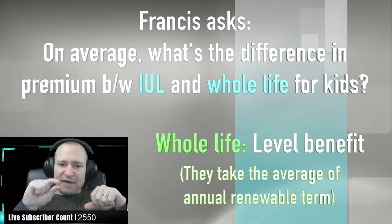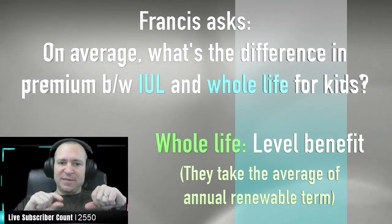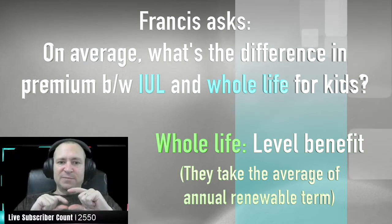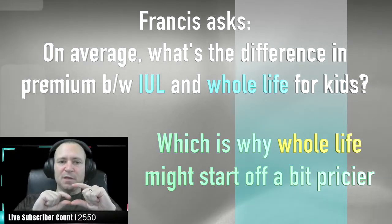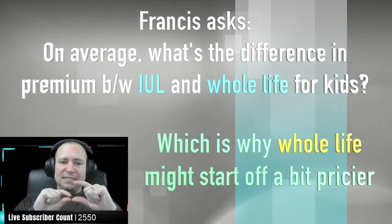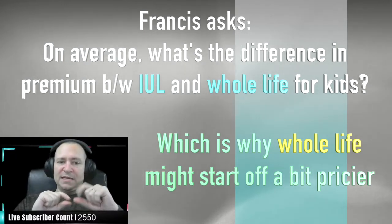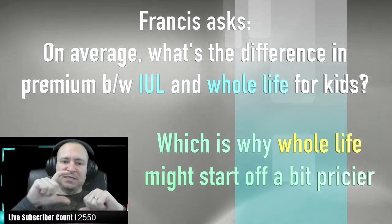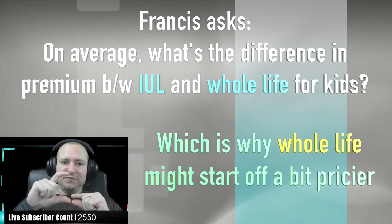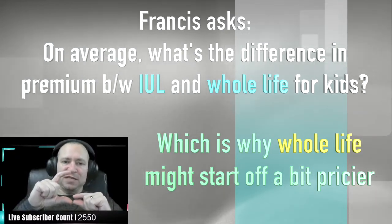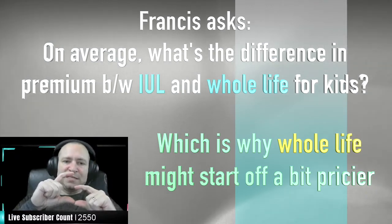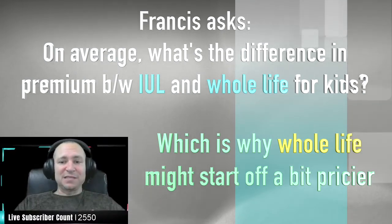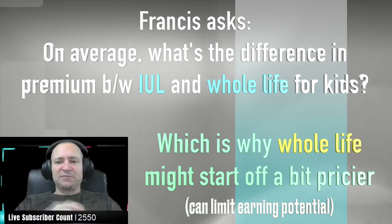So what happens is the IUL has a lower insurance cost, whereas whole life costs more over the life of the policy. The IUL has the ability to grow with an index based on everything you put in above the cost of insurance. If the IUL insurance cost is lower, you've got a lot more that turns into cash value. With whole life, because the insurance cost is higher, you only have a little bit left over for cash value, which really limits how quickly that cash value can grow.